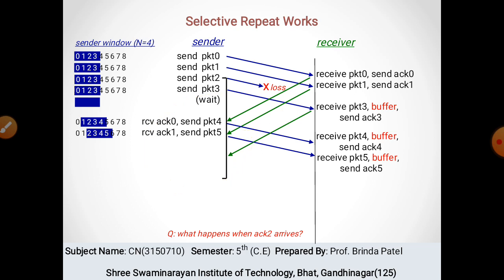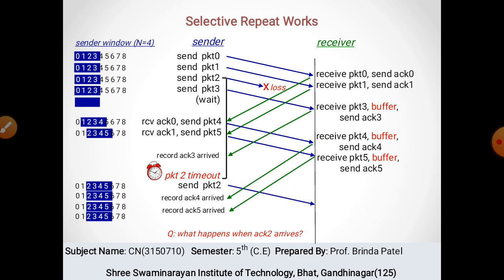अब packet 4 और 5 send होंगे। Receiver को packet 4 और 5 मिल जाएंगे लेकिन चूँकि packet 2 अभी नहीं मिला, इसलिए packets 3, 4, 5 receive होकर buffer में store हो जाएंगे। Sender का timer set है और जिस packet का acknowledgement नहीं मिला उसके लिए — packet 2 का — timeout होगा।